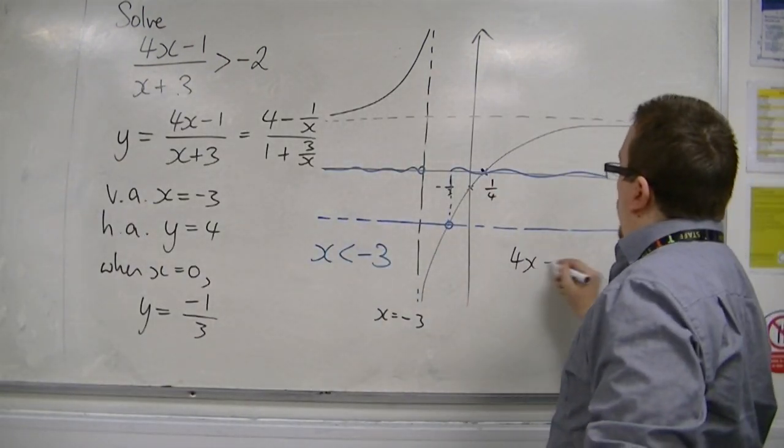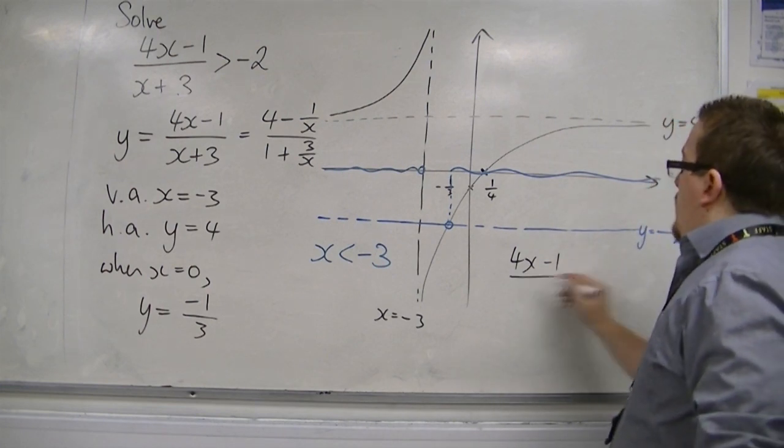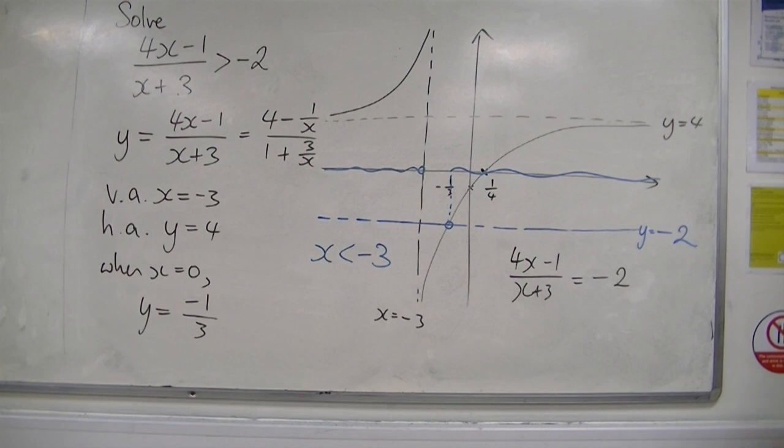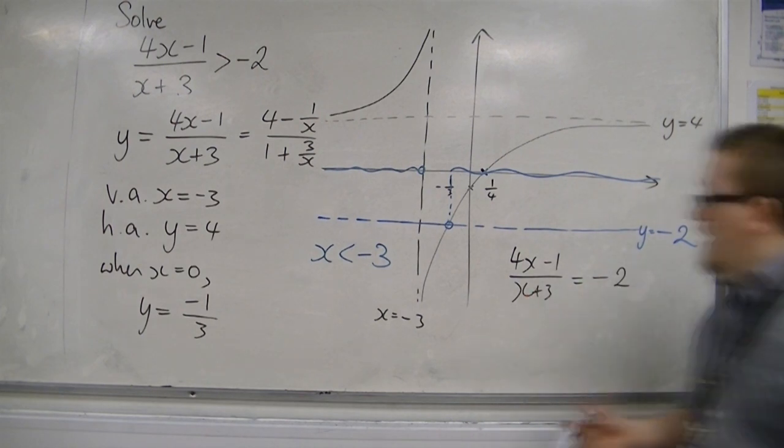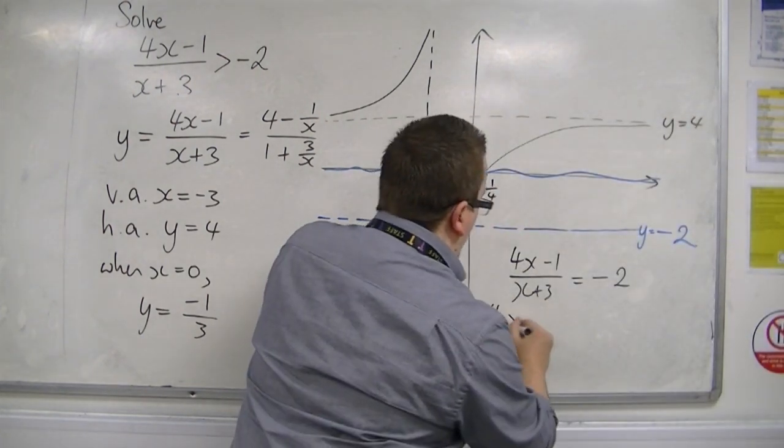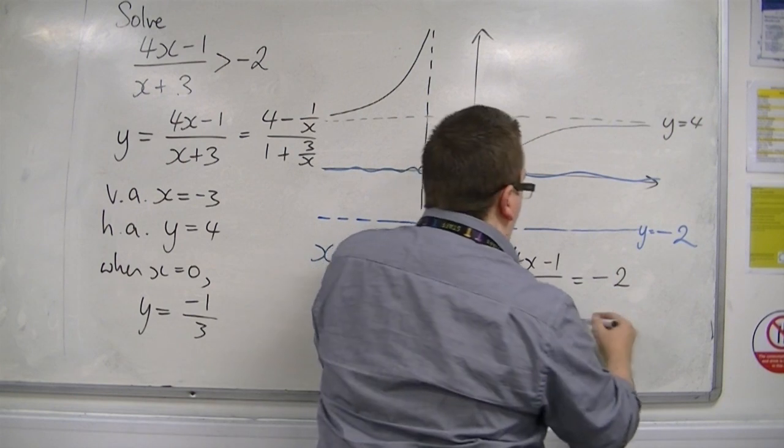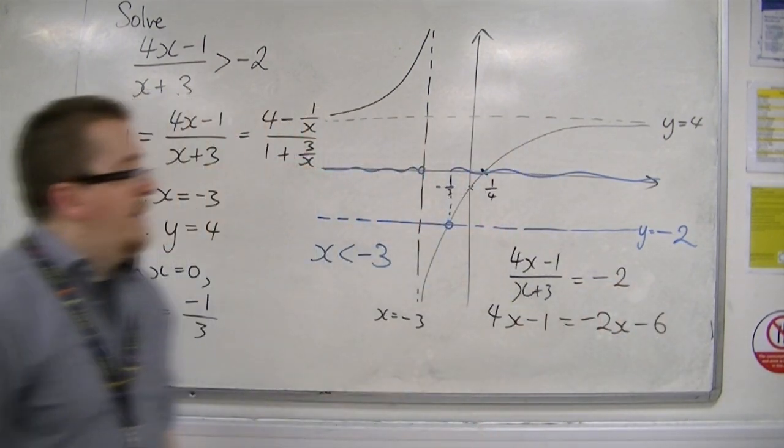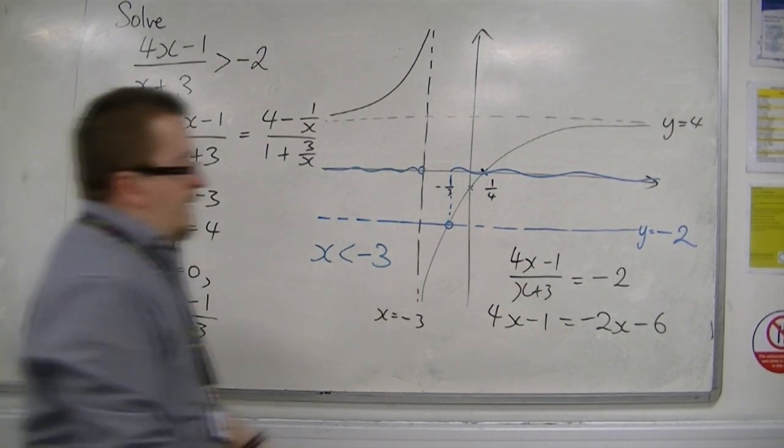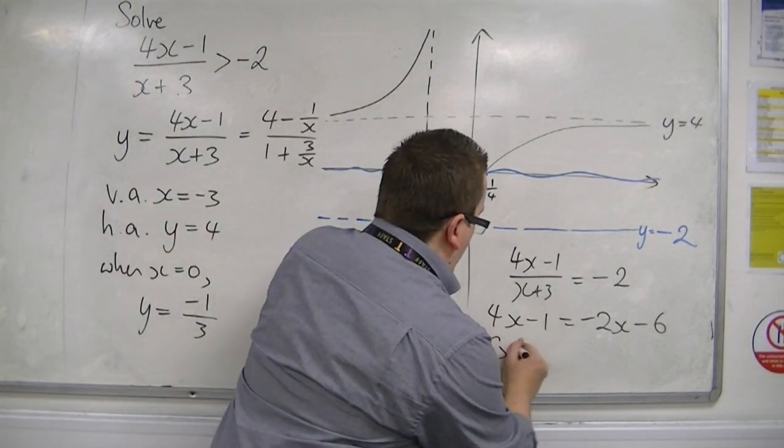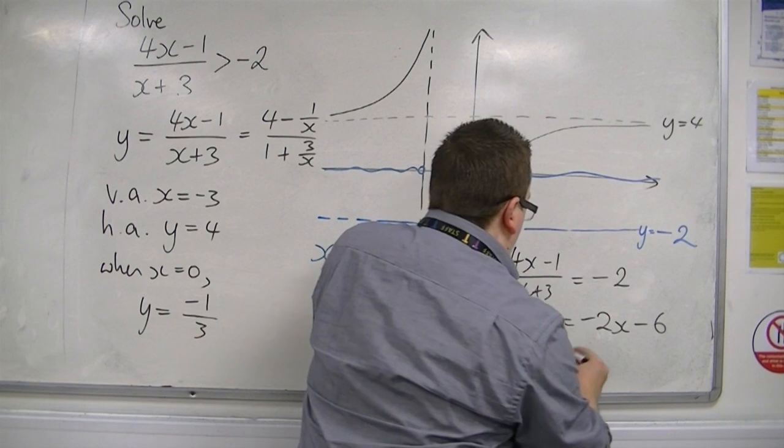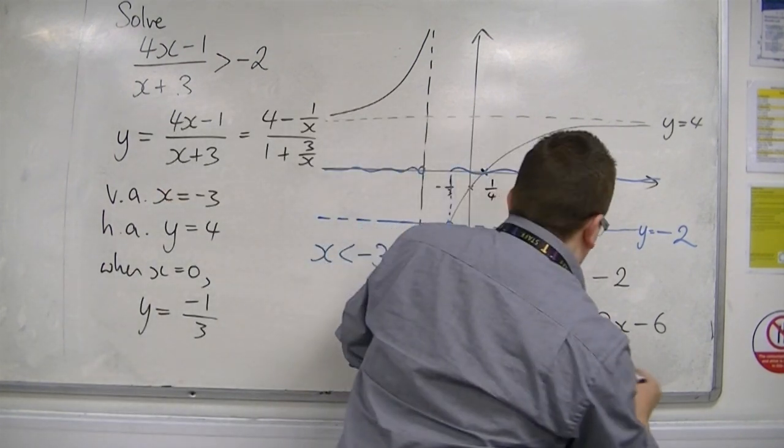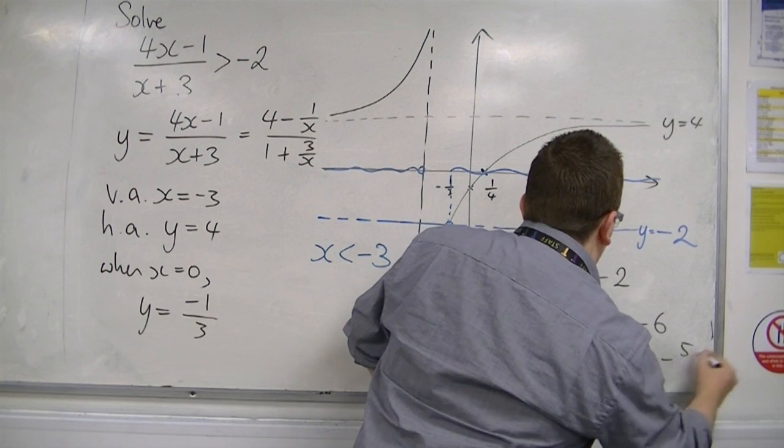So 4x minus 1 over x plus 3 is equal to minus 2. Multiply both sides by the x plus 3, and we'll get 4x minus 1 is equal to minus 2x minus 6. So I'm multiplying the x plus 3 by the minus 2. Add 2x to both sides, add 1 to both sides, so 6x is minus 5, so x is equal to minus 5 sixths.